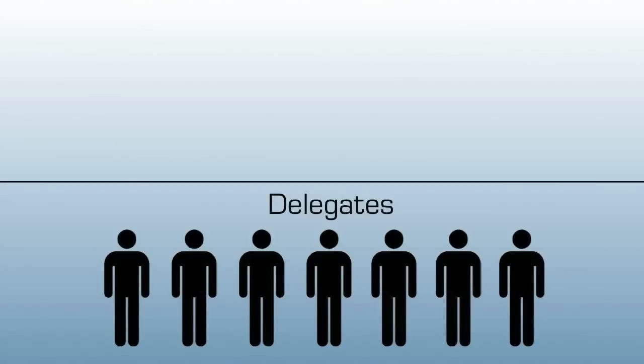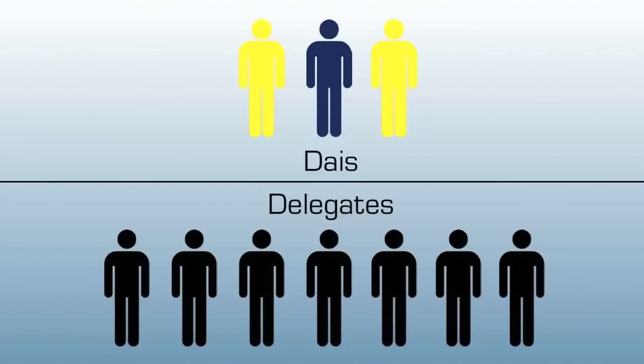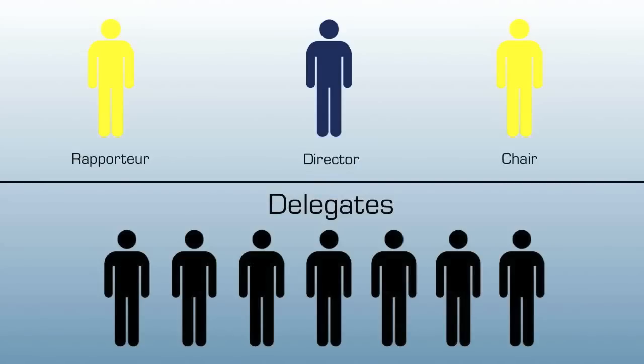The smallest group can consist of one, two, three or more people and is the so-called dais. We will begin by looking at the role of the dais and later move on to look at the special representative of the delegates. Our idealized dais consists of three people: a rapporteur, a chair, and a director.